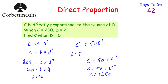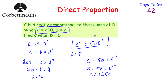So just to recap: we were given that C was directly proportional to D squared, so we wrote C is proportional to D squared. We got rid of the proportion symbol and put in K, the constant of proportionality, to get C equals K multiplied by D squared. We used the given pair of values — C equals 200 and D equals 2 — to find that K equals 50. That gave us our formula C equals 50 multiplied by D squared, which we then used to find C whenever D equals 5. Well done if you got that.